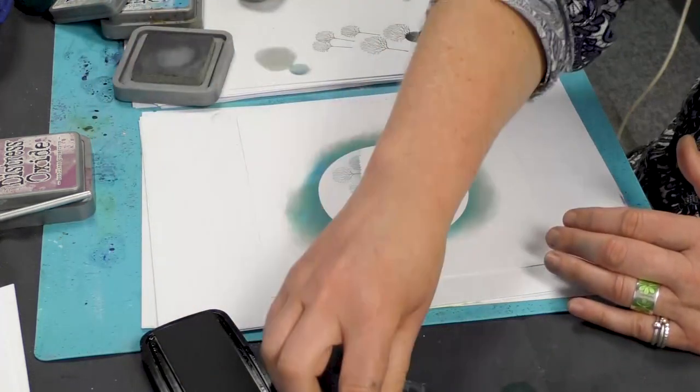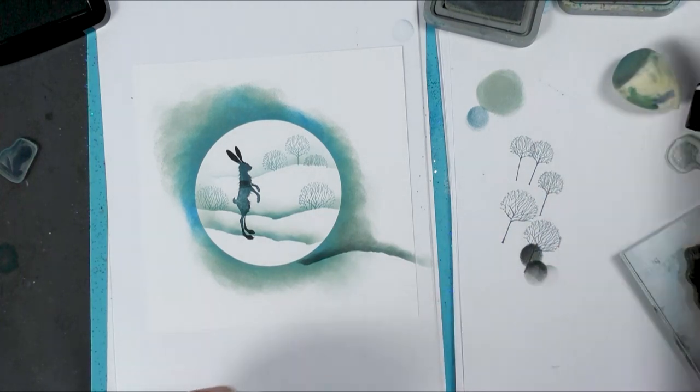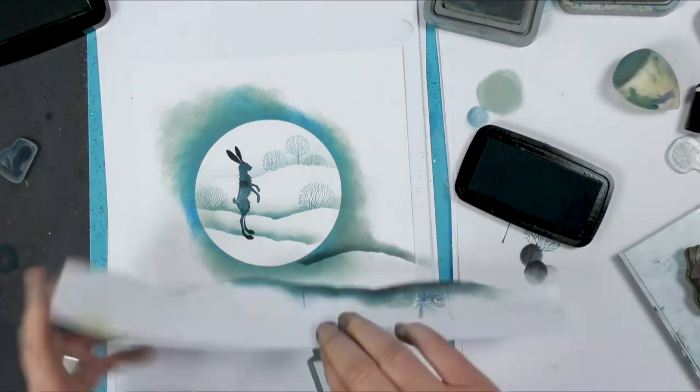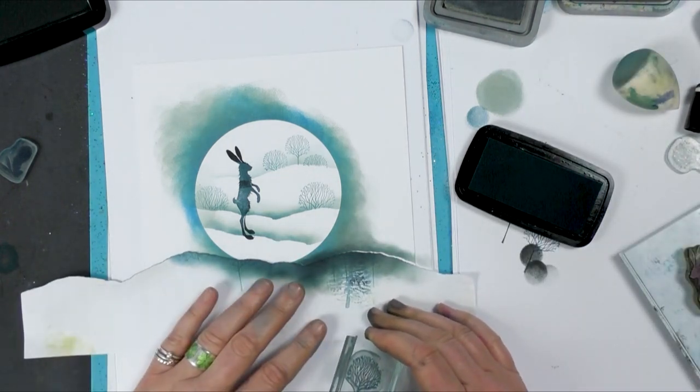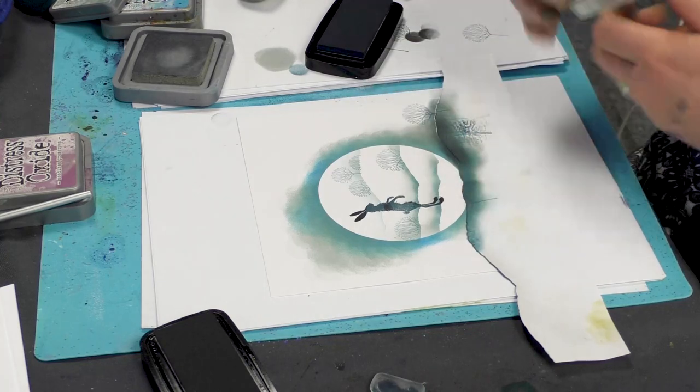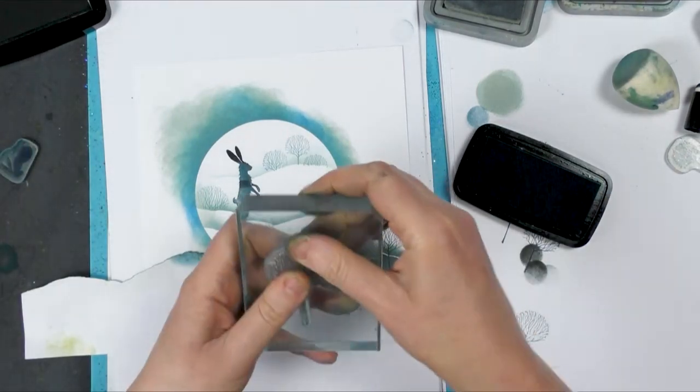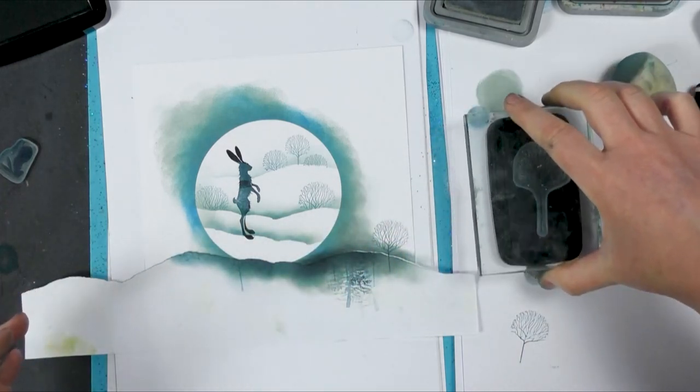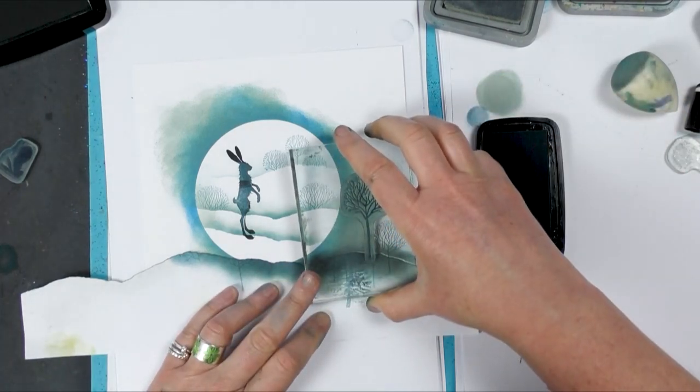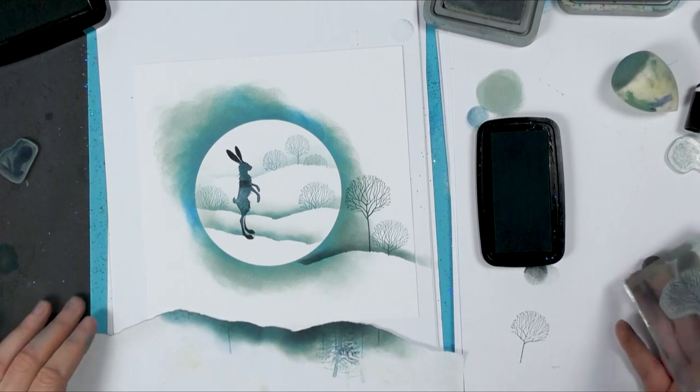And we're going to grab one of our trees. And I'm inking up in the twilight. Going back to the mask. And then taking our taller tree. But this is the biggest one out of the set. Inking up again in the twilight. Let's see how that looks. That looks quite nice.